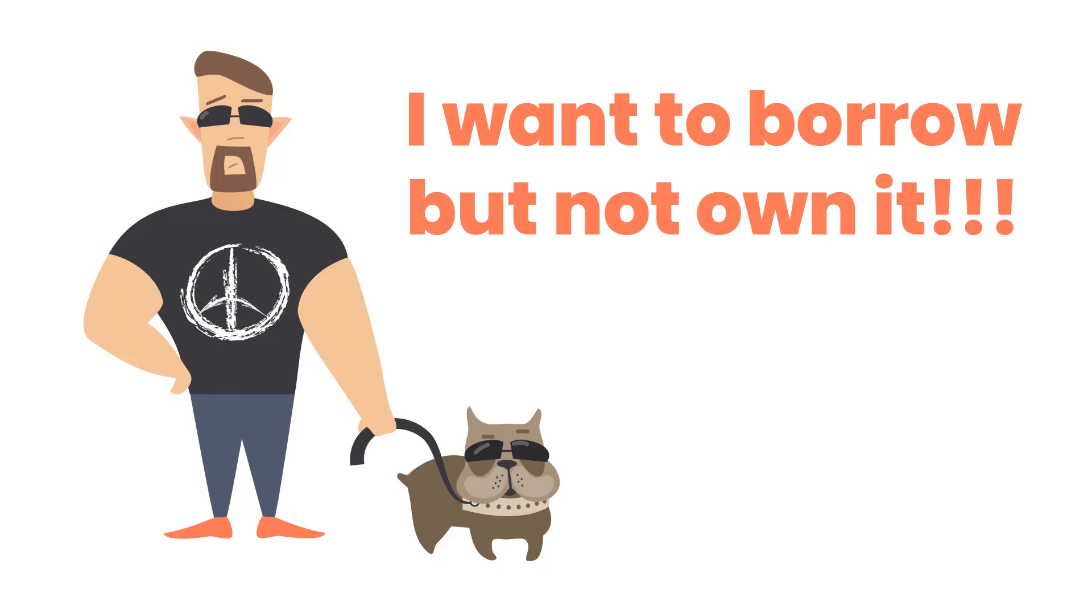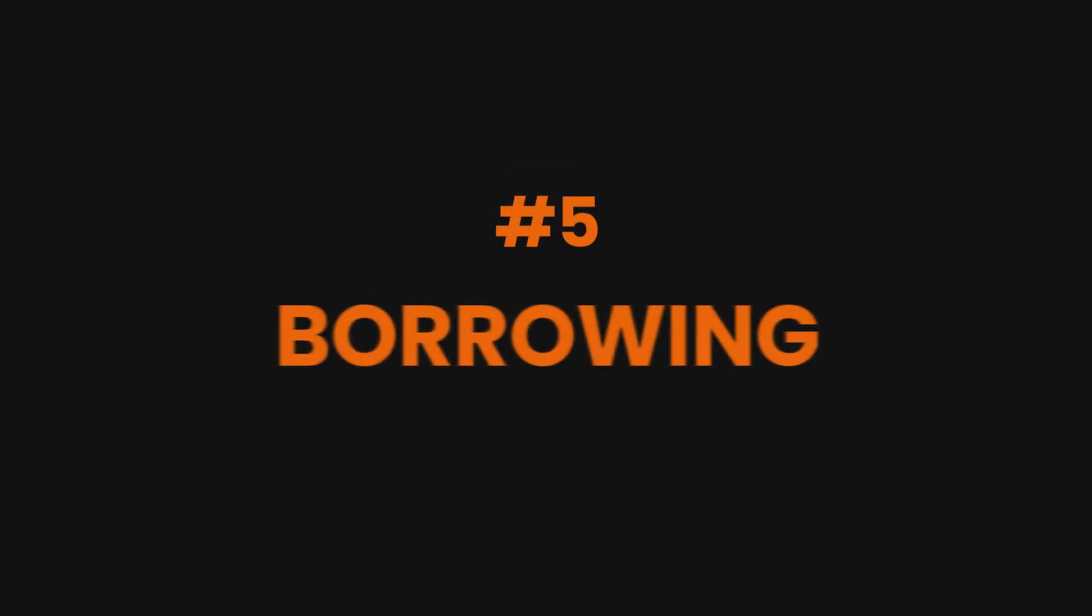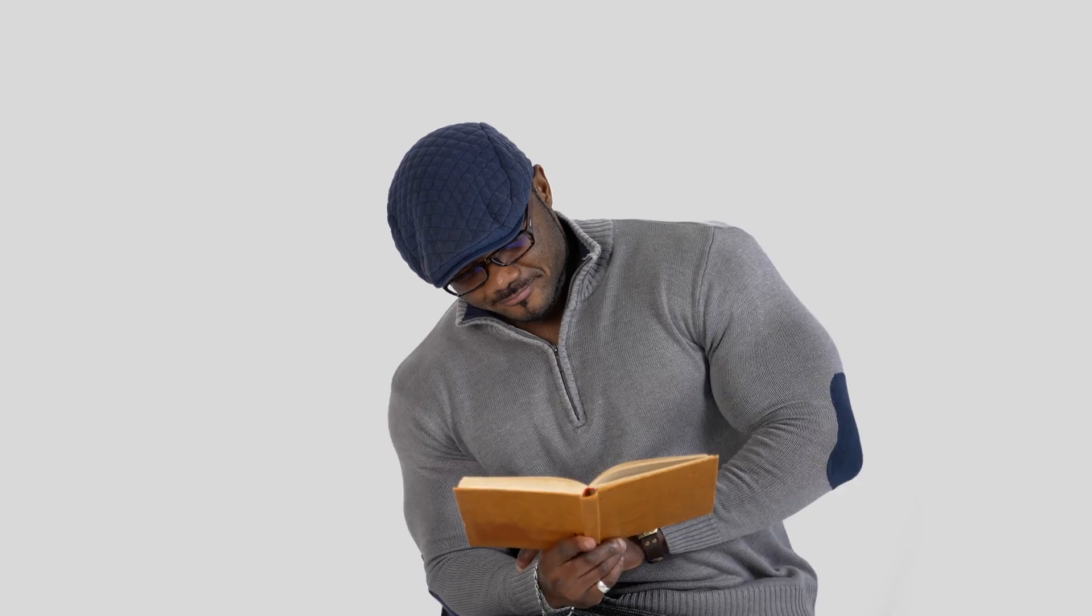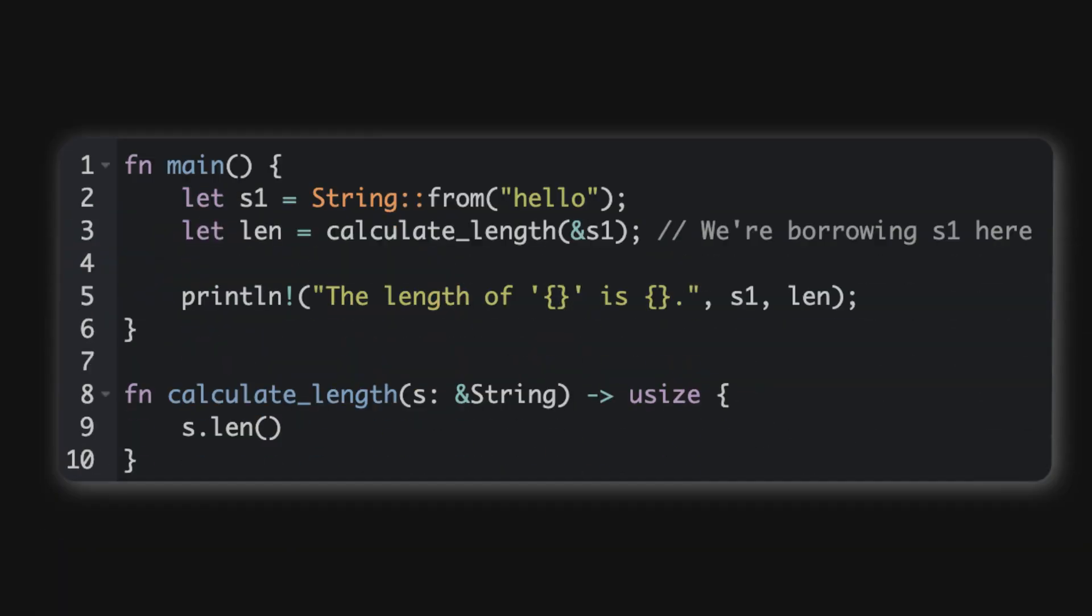But what if you want to use a value without taking ownership? That's where borrowing comes in. Think of it like lending a book to a friend - you still own that book, but they can read it for a while. In Rust, you borrow values using references, which looks like this.